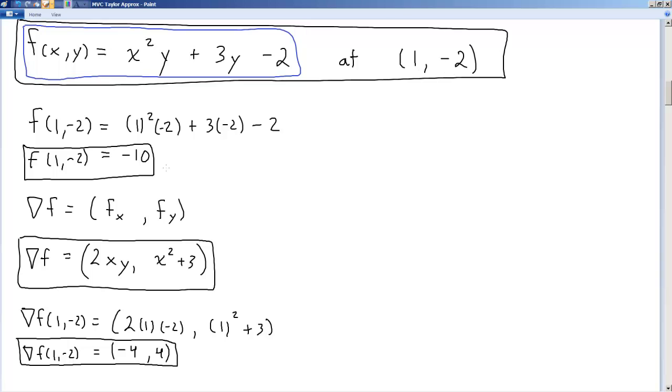So I've done a lot of the math here for you so that we don't go through all of the tedious steps. But basically you evaluate the function at the point. We get -10 in this case. You take the gradient of the function. That's just the first derivative with respect to x and the first derivative with respect to y. You get this expression.